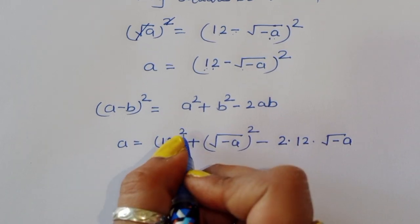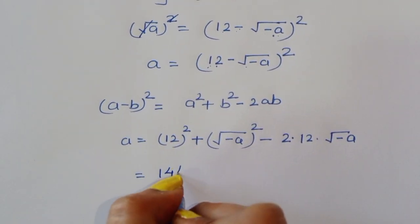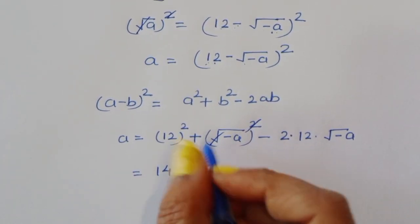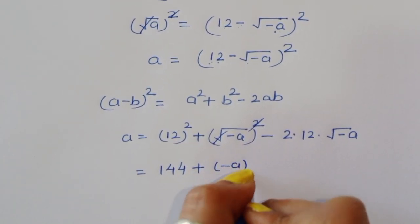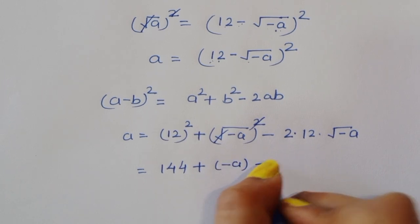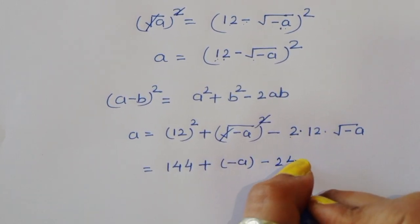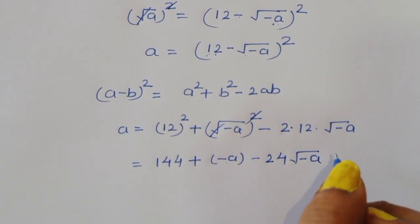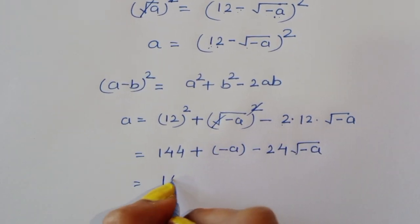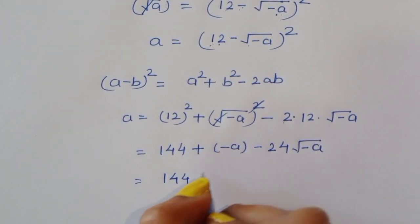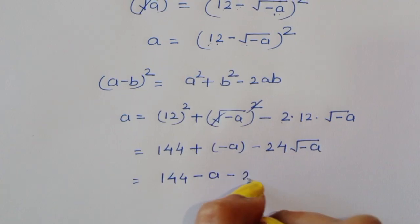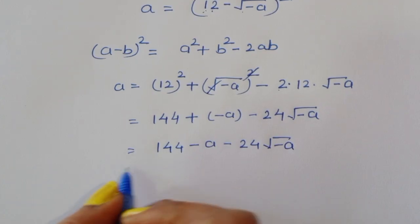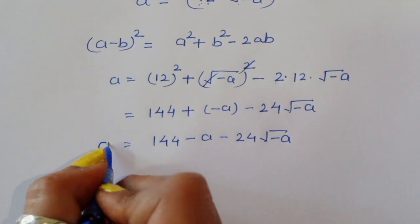12² = 144, and (√(−a))² = −a, and 2 × 12 = 24, so: a = 144 + (−a) − 24√(−a), which gives a = 144 − a − 24√(−a).